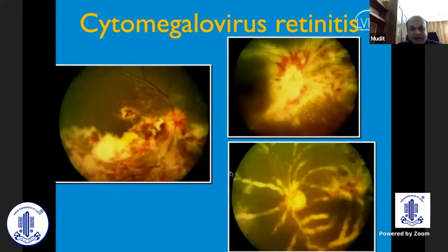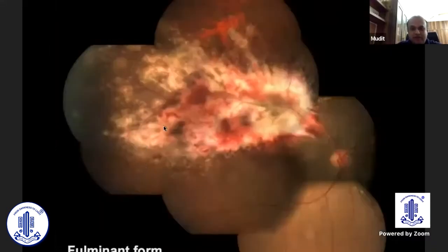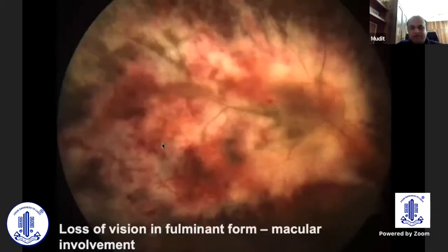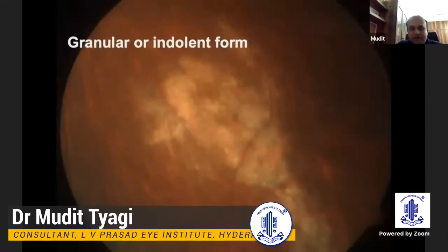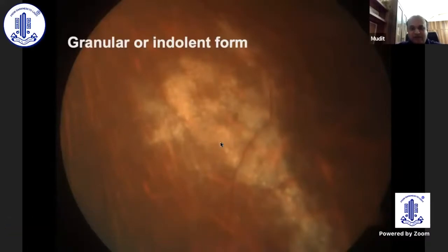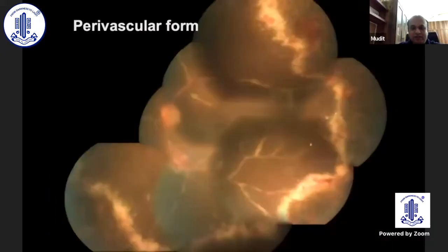CMV retinitis can present with characteristic patterns. Number one, there will be absent or very minimal vitritis. In the fulminant form, you see multiple hemorrhages and extensive areas of retinitis — loss of vision in these cases is often due to macular involvement. In the granular or indolent form, you do not see extensive hemorrhages but you see areas of retinitis. Subsequently, patients may develop retinal detachment due to multiple breaks occurring where areas heal with necrosis.